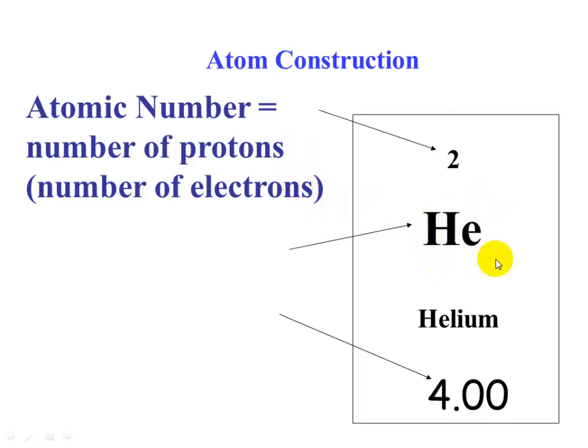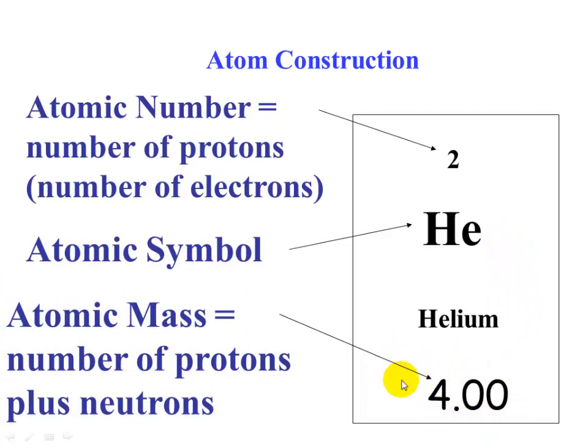He is the symbol, and the number at the bottom, in this case 4.00, is the atomic mass. The atomic mass is calculated by taking the number of protons plus the number of neutrons. Helium has two protons, so how many neutrons would that be?